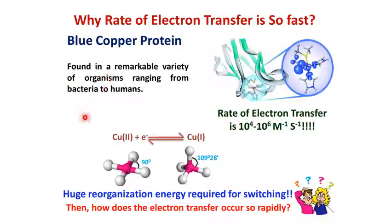First, we would like to know what are blue copper proteins. This type of protein are type 1 copper-containing proteins — they are redox proteins. Their major role is redox transformation. This kind of protein plays a crucial role to shuttle electrons from an electron donor to an electron acceptor in bacteria and plants.